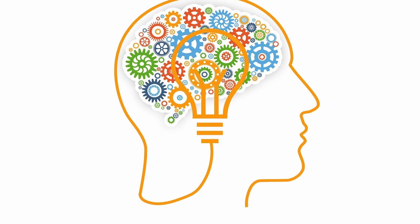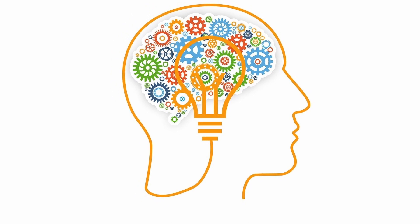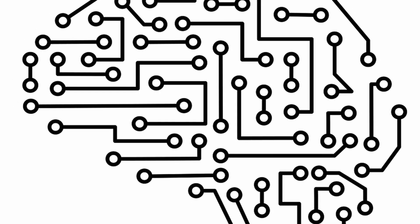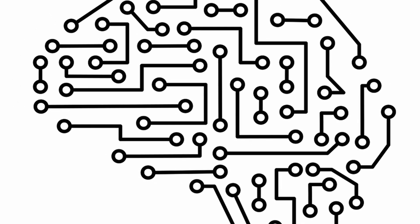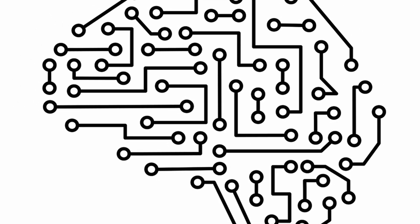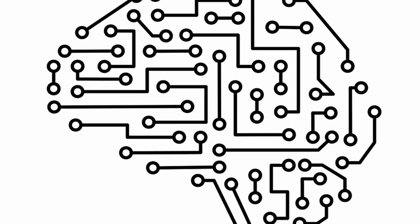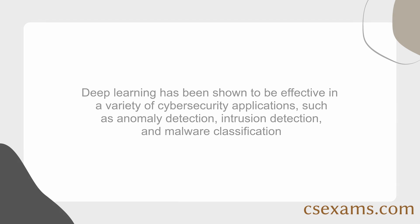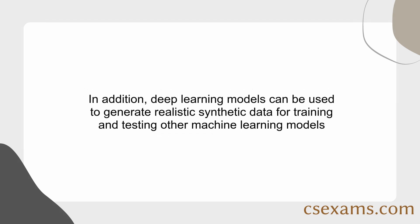Deep learning is a branch of machine learning based on a set of algorithms that attempt to model high-level abstractions in data by using a deep graph with multiple processing layers or neural networks. Deep learning has been shown to be effective in a variety of cybersecurity applications, such as anomaly detection, intrusion detection, and malware classification. In addition, deep learning models can be used to generate realistic synthetic data for training and testing other machine learning models.